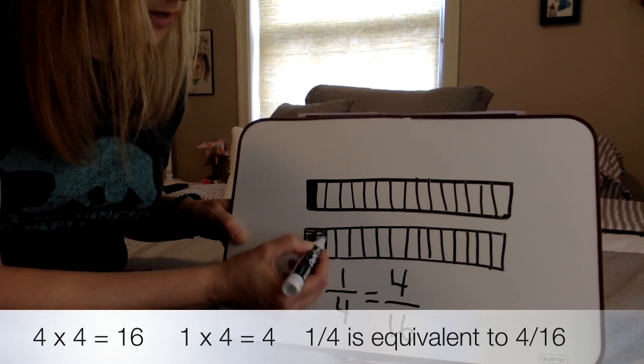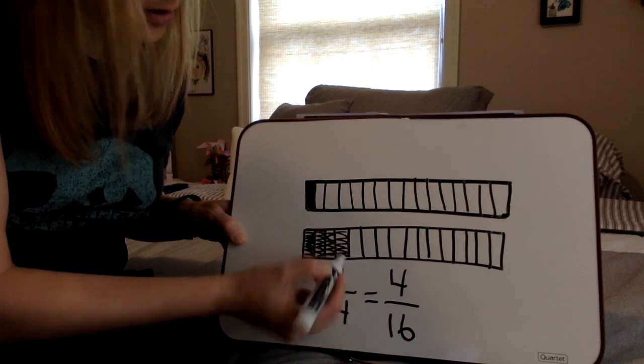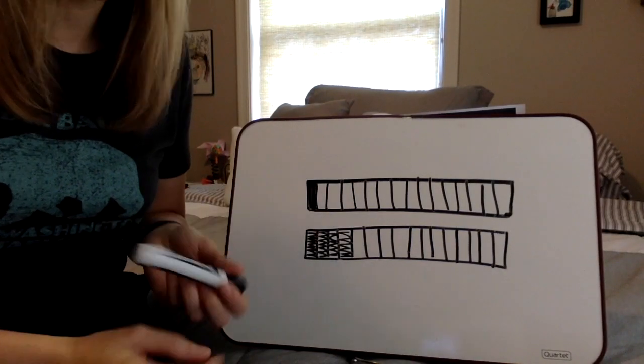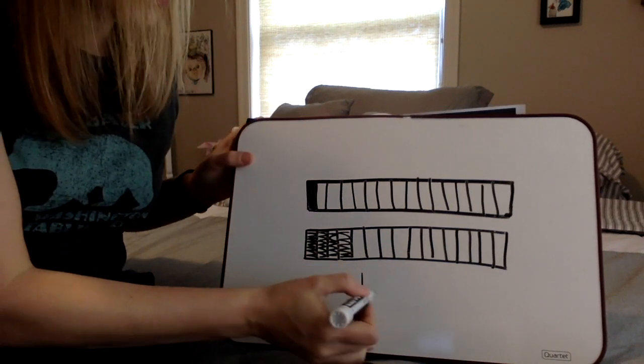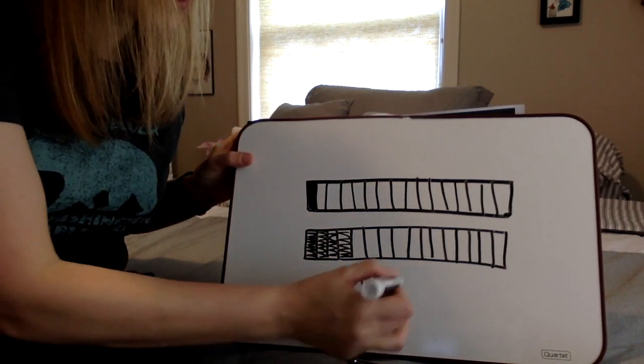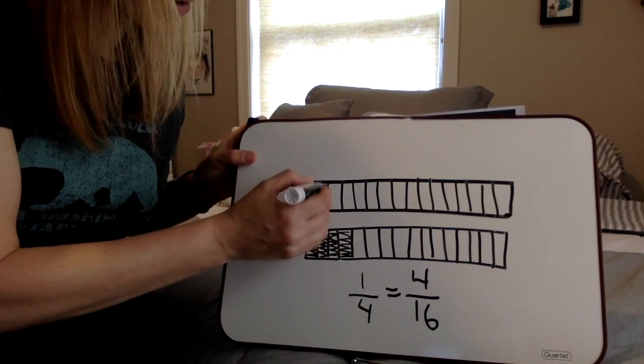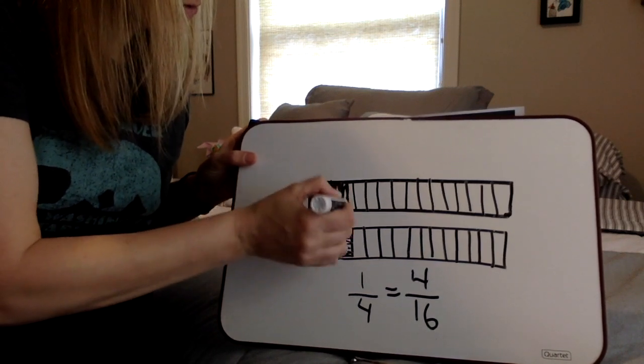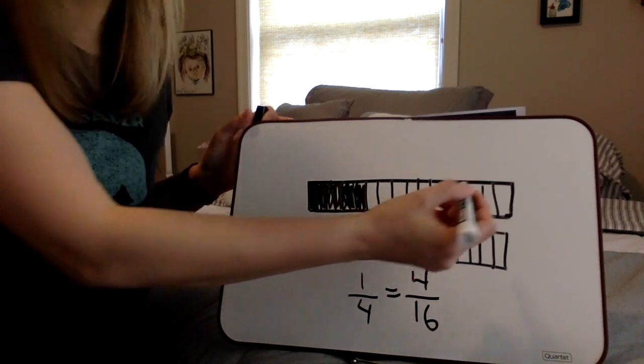So they can color in one, two, three, four of these boxes. It's my turn again. I take the dice. I roll, I rolled one fourth. We just said that one fourth was equivalent to four sixteenths. So I now get to color in one, two, three, four of mine. And we keep doing this.